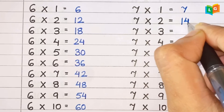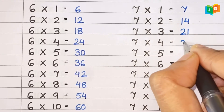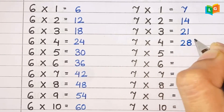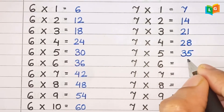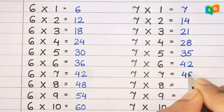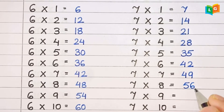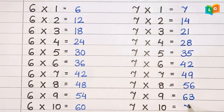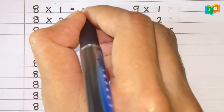Let's see table of 7. 7 1s are 7, 7 2s are 14, 7 3s are 21, 7 4s are 28, 7 5s are 35, 7 6s are 42, 7 7s are 49, 7 8s are 56, 7 9s are 63, 7 10s are 70.